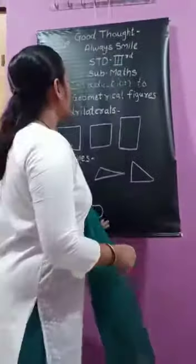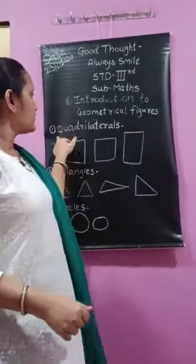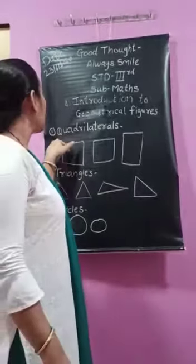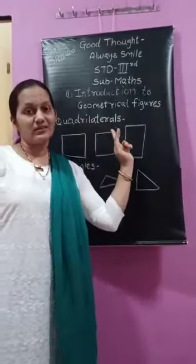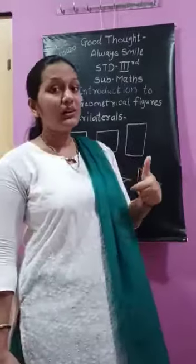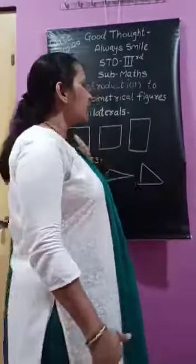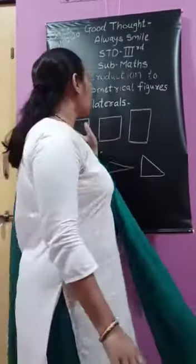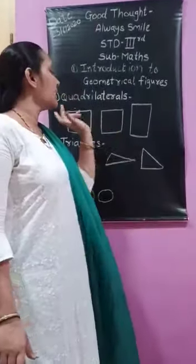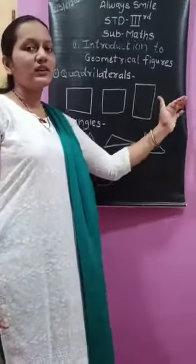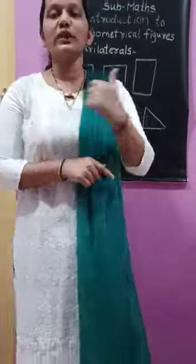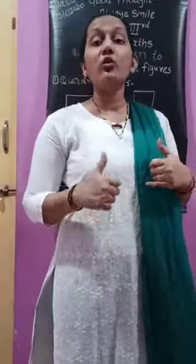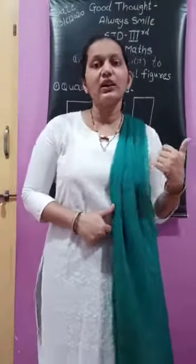The first geometrical shapes are quadrilaterals. What is this? Quadrilateral — it's a new word. Quadrilateral new word hai aapke liye, right? But confusion karna nahi hai. Quadrilateral mein kya aayega? Squares, rectangles — like square shape ke jo bhi objects hain, woh aayenge quadrilateral mein.